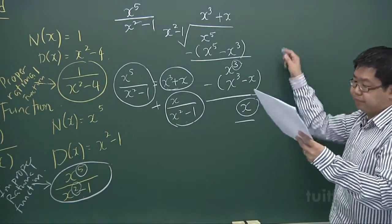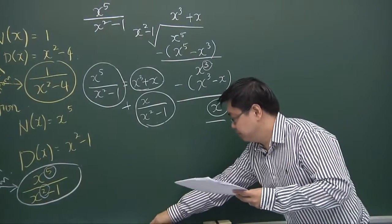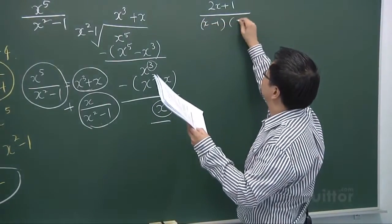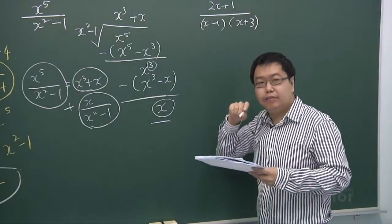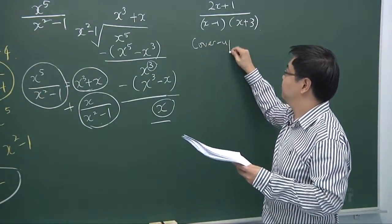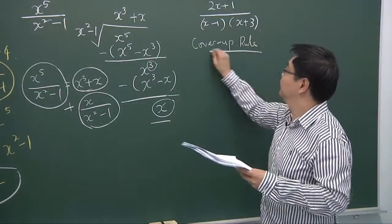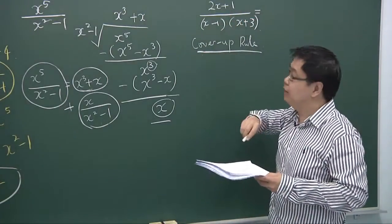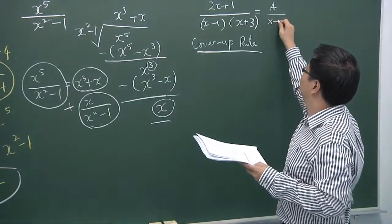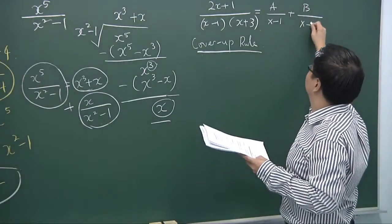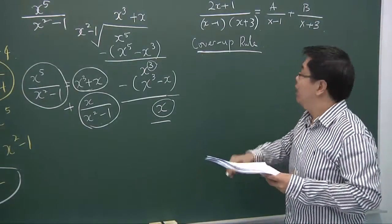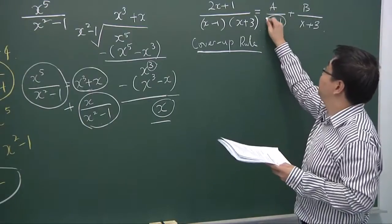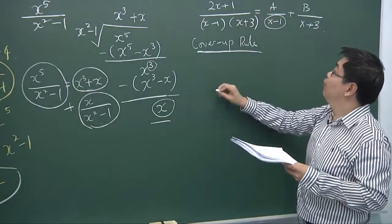Let's take a look at the first example: 2x plus 1 over (x minus 1)(x plus 3). Using the cover-up rule, the first step is to write this as A over (x minus 1) plus B over (x plus 3). To find A, we cover the (x minus 1) term and substitute x equals 1 — the value that makes that denominator equal to zero.